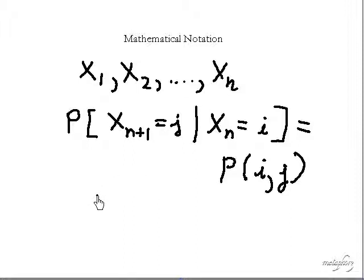The way to interpret this is: what is the probability that the system, given that it's in state i, will move to state j.